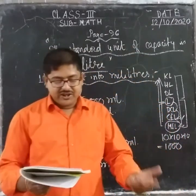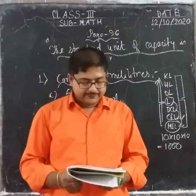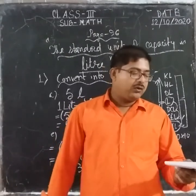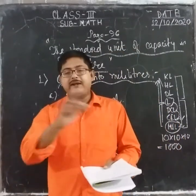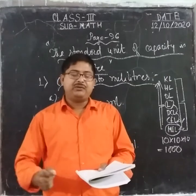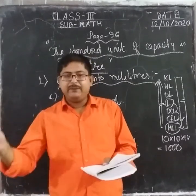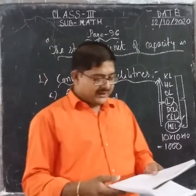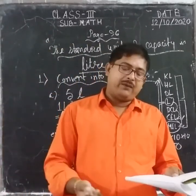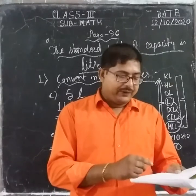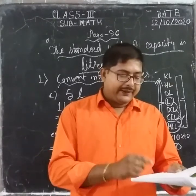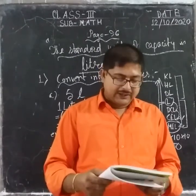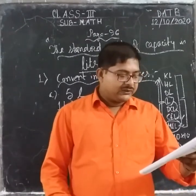The third one is also the same: change into liter. First take the whole portion — for example, 2 kilometers and 240 liters — convert the whole portion into liters, then put the decimal and the remaining part would be the liter value. The last one is convert into liters and milliliters, which is also very simple: divide the milliliters by one thousand and the answer becomes liters.